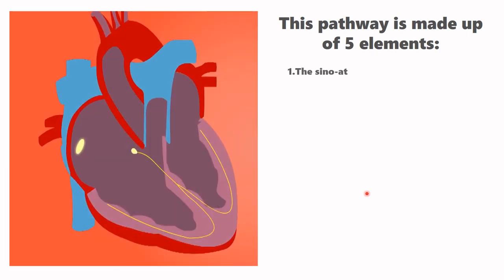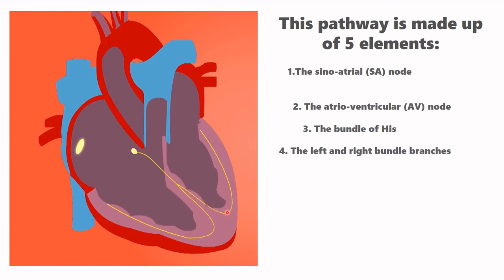So this pathway is made up of five elements. Let's see them. There is SA node or sinoatrial node. Then there is AV node, or atrioventricular node. Then there is bundle of His. And then the bundle branches. There is left bundle branches and right bundle branches. And finally, there is the Purkinje fibers. The Purkinje fibers are the ones into the walls of ventricles. There is right Purkinje fibers and left Purkinje fibers.